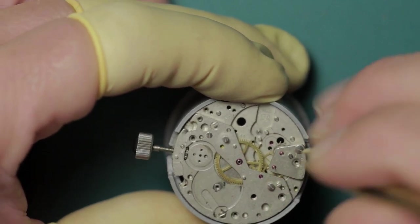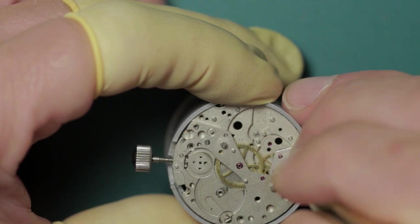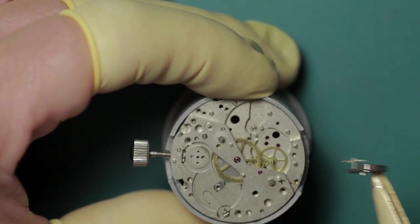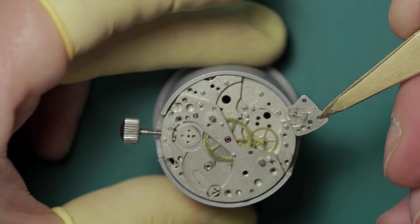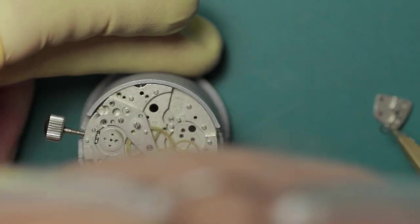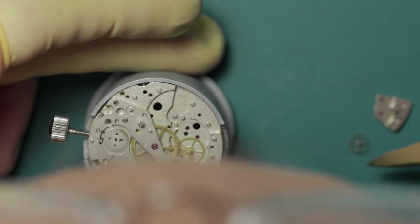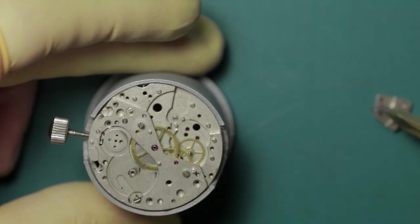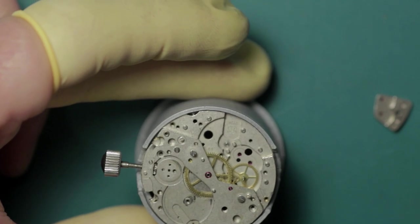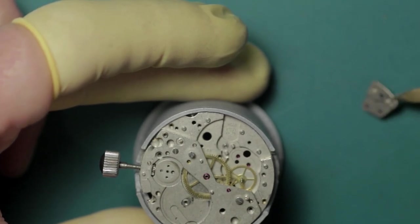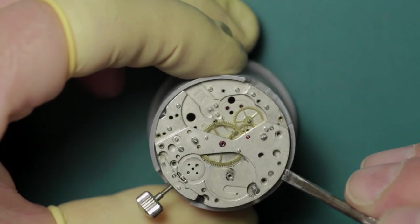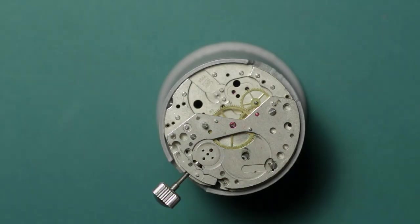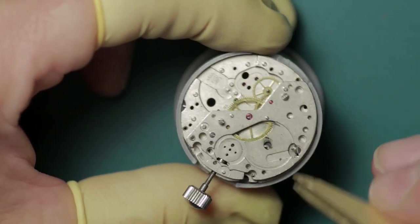You'll note as I lift this bridge away that the escape wheel actually comes away with the bridge, and again this is just down to old lubricant making the pivot stick into its jewel. Here I'm removing that and just physically checking the pivots to make sure that there's nothing bent or sticking or damaged. Once again I'm using my hand lever to help separate the barrel and train bridge, and that can be lifted away.